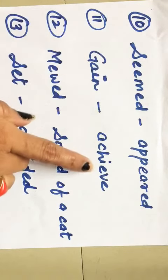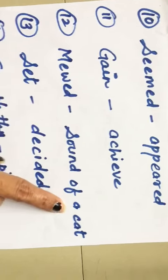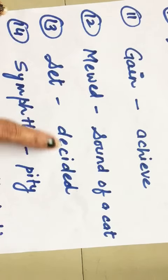Number 11: Gain - achieve. Number 12: Meow - sound of a cat. Number 13: Said - decided.